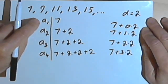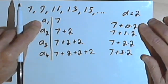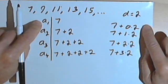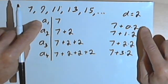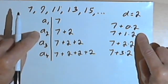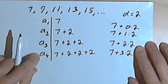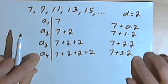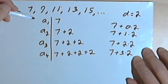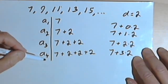And now looking at this, I can see a relationship between the number of the term and the number I used to multiply that common difference. So for term number 1, I multiplied the common difference, the 2, by a 0. For term number 2, I multiplied by 1. For term number 3, I multiplied by 2. For term number 4, I multiplied by 3. So I'm multiplying the common difference, the 2, by the number that is 1 less than the number of the term.